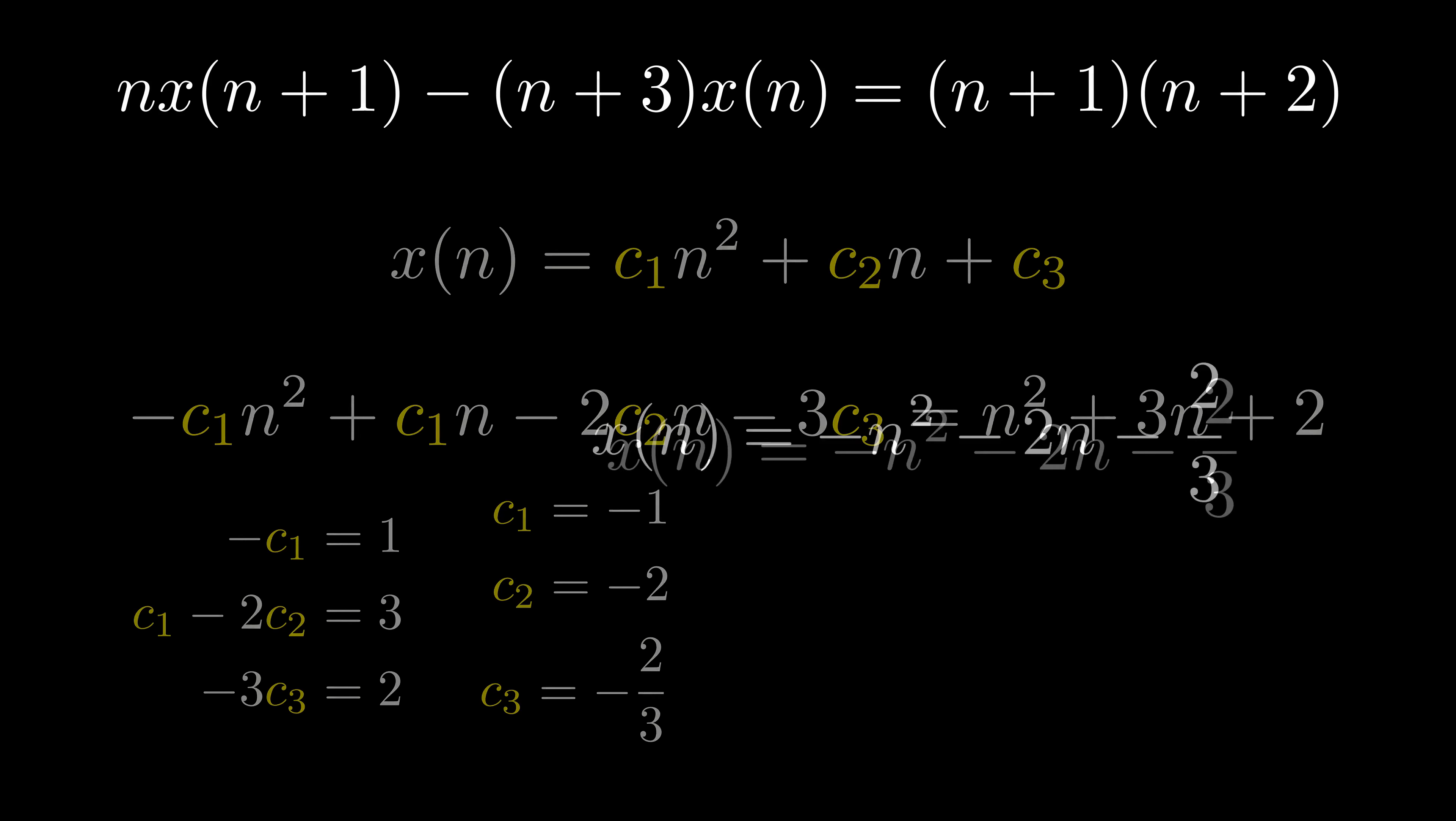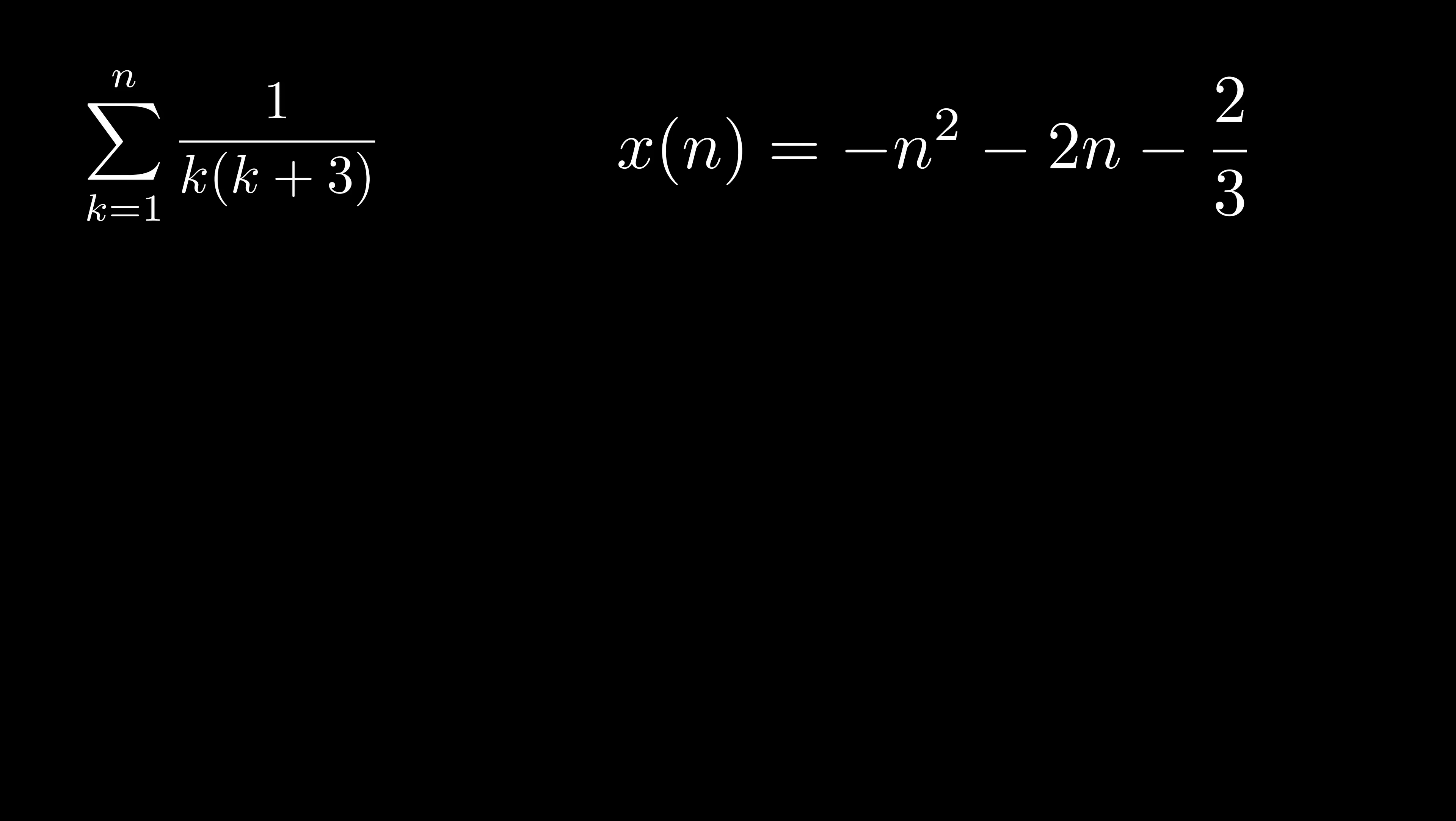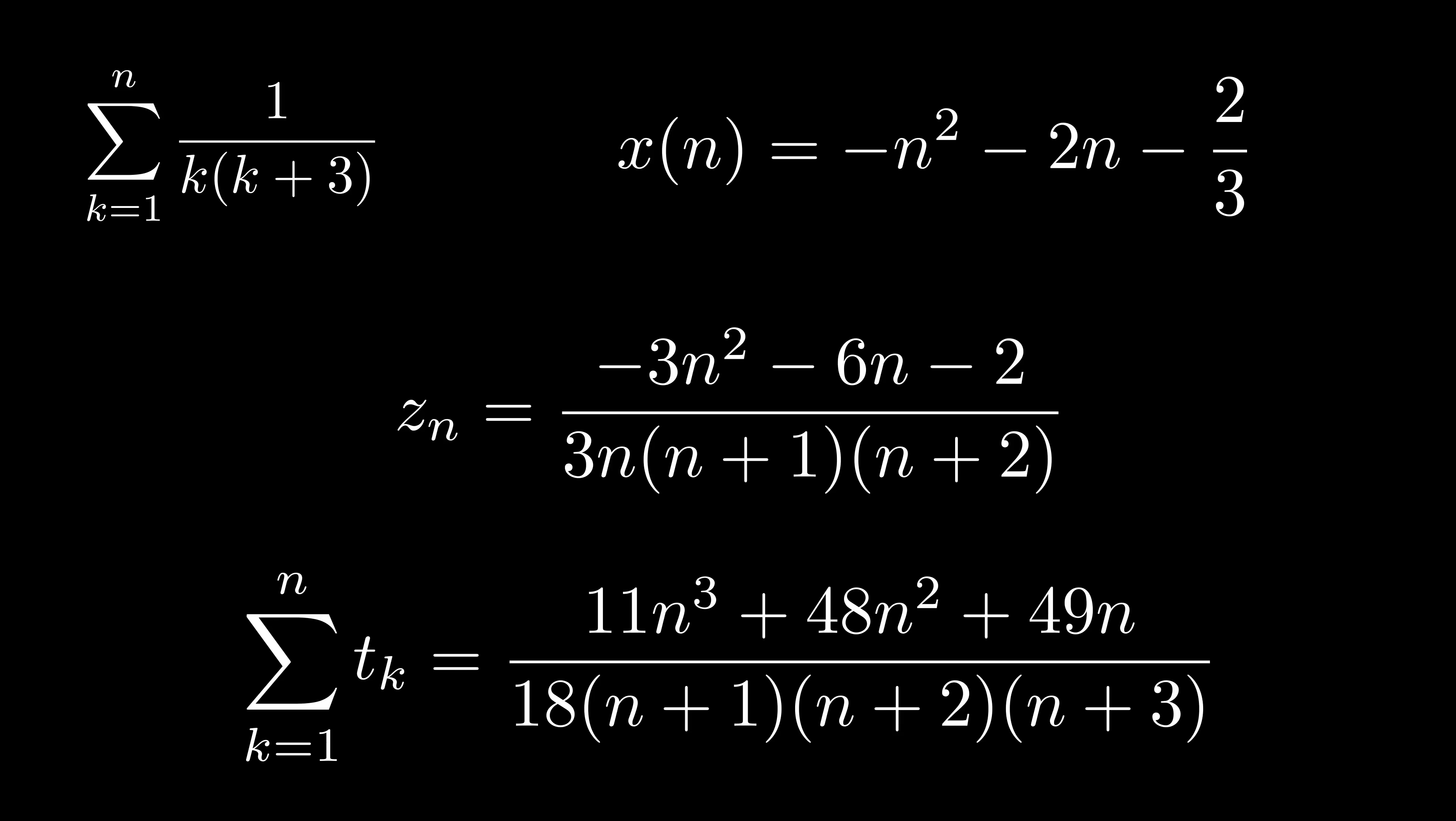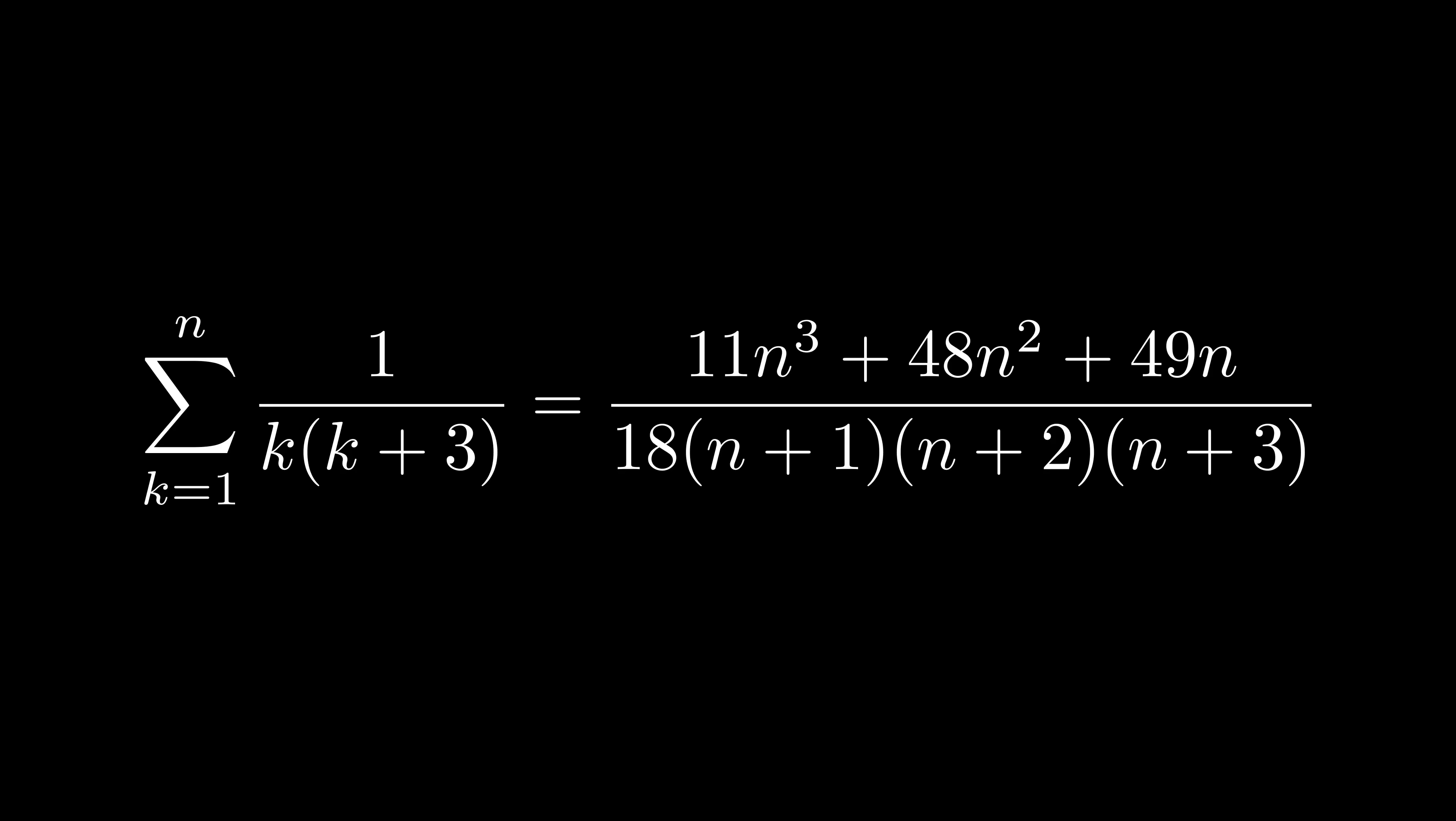The rest is easy. Plug x back to obtain our z term, which was the telescoping term we were looking for. Evaluating the closed form for this sum, while extremely tedious and obnoxious to do by hand, is just routine algebra at this point. Look at how nasty this innocent-looking summation turned out to be. This isn't the most straightforward way to do this problem, but all of our steps were completely algorithmic and routine.